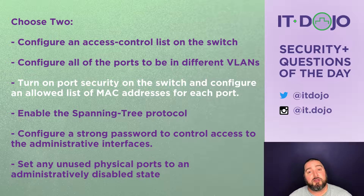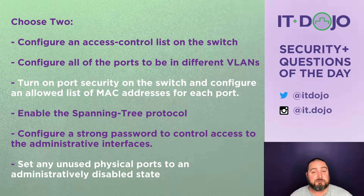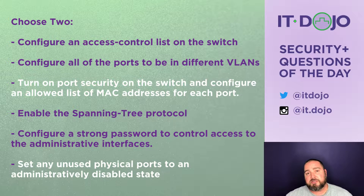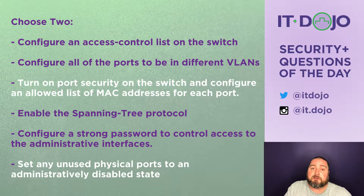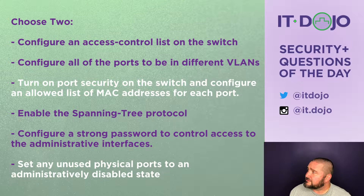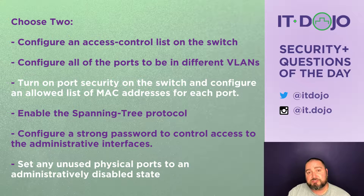The last choice says set any unused physical interfaces to an administratively down state. This is a good idea, though it's a bit cumbersome. If ports 17 through 24 aren't currently plugged into anything, you go into that switch and set all those to be disabled or shut down. If anybody plugs into those ports they won't come up, but it also doesn't allow for dynamic connectivity — an administrator would have to get involved. So yes, it's good from a security perspective, though not always ideal from an ease-of-use perspective. The best answers are: turn on port security and configure a list of allowed MAC addresses, and administratively shut down the unused ports on the switch.